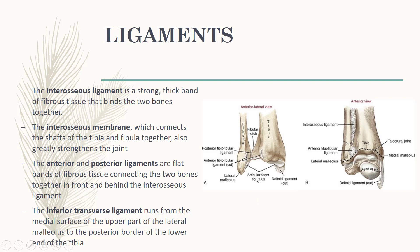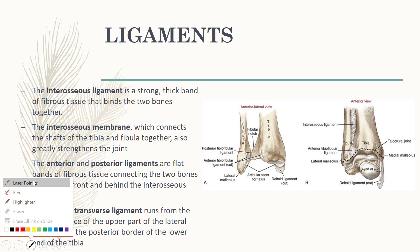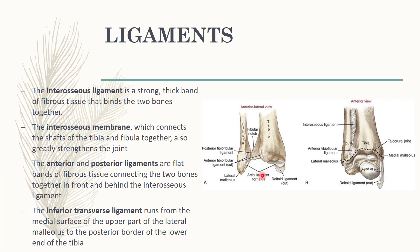Now we will discuss the ligaments of the inferior tibio-fibular joint. There is the interosseous ligament, which is a very strong and thick band of fibrous tissue that binds the two bones together. This interosseous ligament is very strong and is situated between the tibia and the fibula.